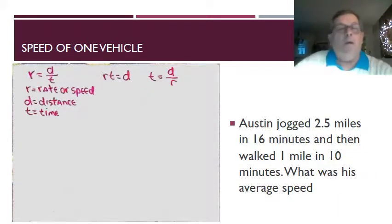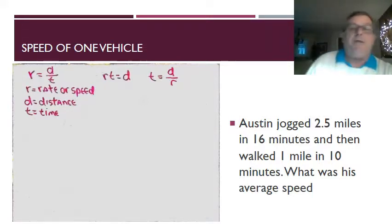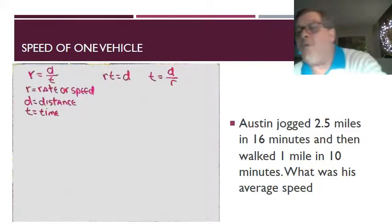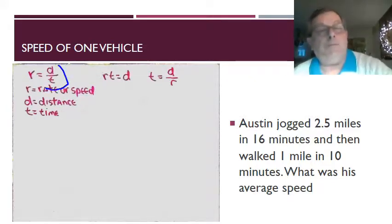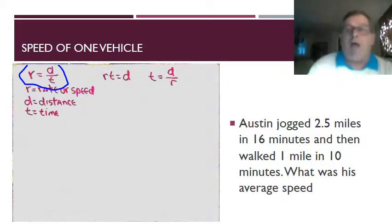Well let's look at one more like this. Even though it says speed of one vehicle, this time the vehicle is on foot because we have a problem here that says that Austin jogged two and a half miles in 16 minutes and then he walked one mile in 10 minutes. What was his average speed? So we're just going to use the basic formula, which is rate equals distance over time, but we've got two measurements that we've got to contend with.